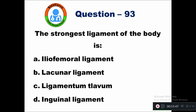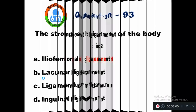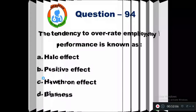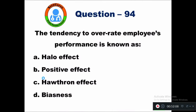Question 93: The strongest ligament of the body is — option A iliofemoral ligament, B lacunar ligament, C ligamentum flavum, D inguinal ligament. The strongest ligament of the body is the iliofemoral ligament.